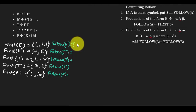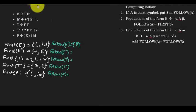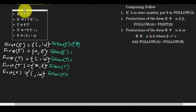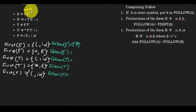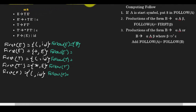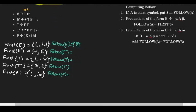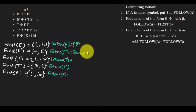Since E is the start symbol, dollar is in follow of E. Looking at the production E → T E', this is of the form alpha A with no beta, so follow of E' will include follow of E. So follow of E' = follow of E. That part is done.